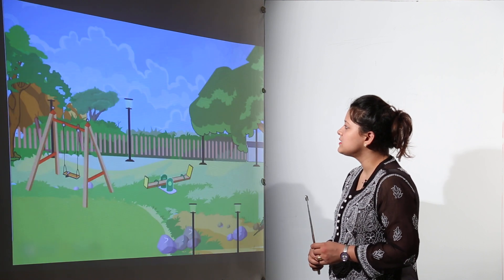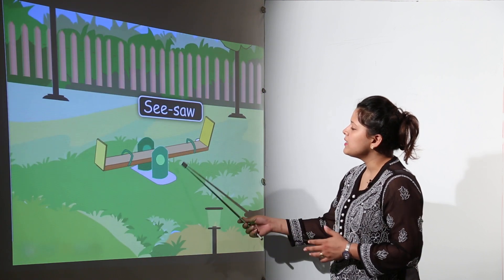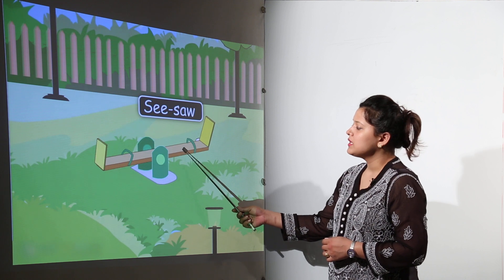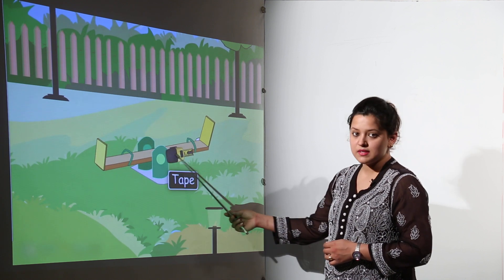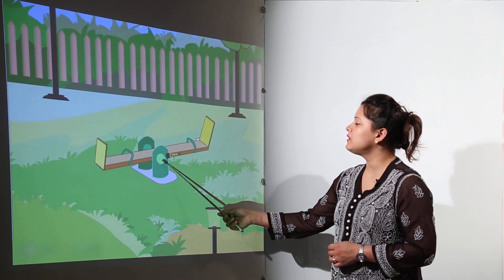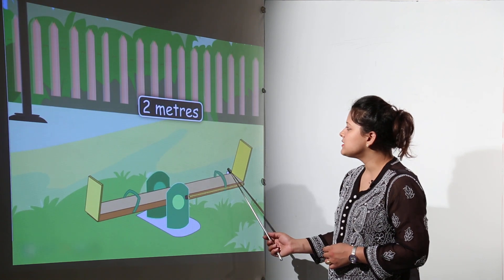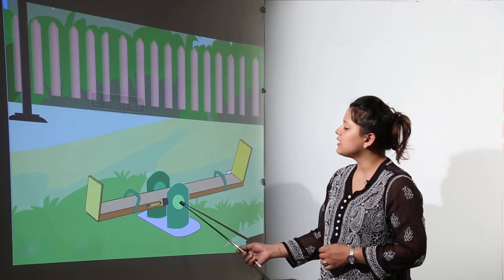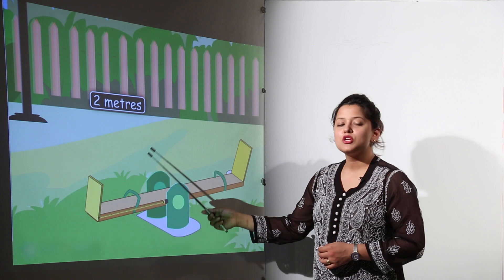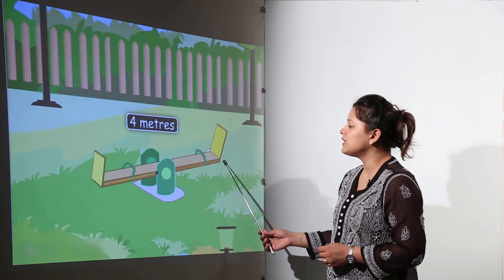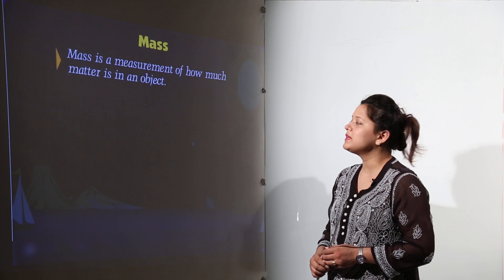Next what do we have is the measurement of the seesaw. The seesaw is having some length. We can measure it from the middle. On one side it is 2 meters and on the other side also it will be 2 meters in length. So in total the length of the seesaw is 4 meters.